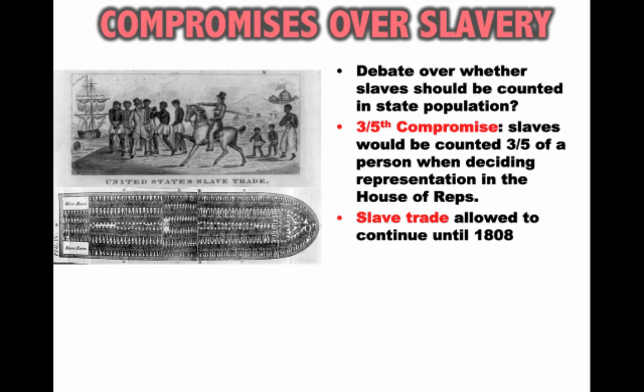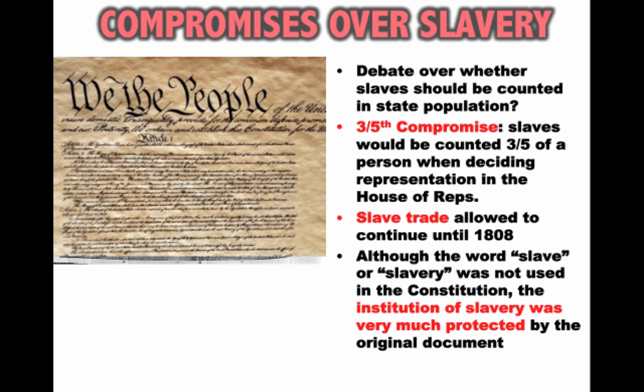Another agreement surrounding slavery was about the slave trade — how much longer should they allow people to be forcibly brought to this nation founded upon liberty and freedom? At the convention they decided to allow the slave trade to continue until 1808, giving another 20 years for slaves to be brought into the United States. Finally, although the words 'slave' or 'slavery' were not used in the Constitution, the institution of slavery was very much protected by the original document — they even added a fugitive slave clause, stating that if your slave ran away, you were able to reacquire your property and bring them back.